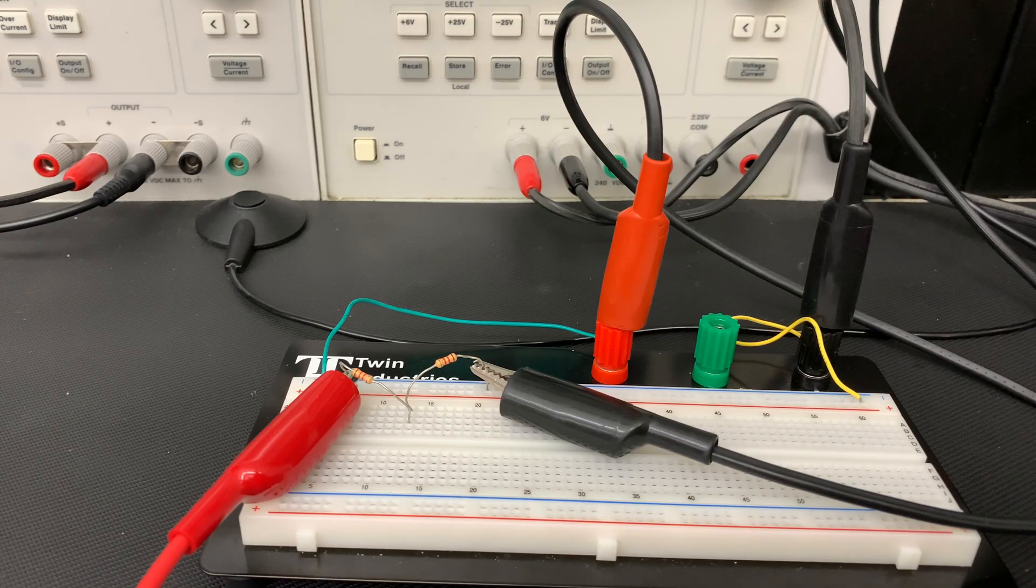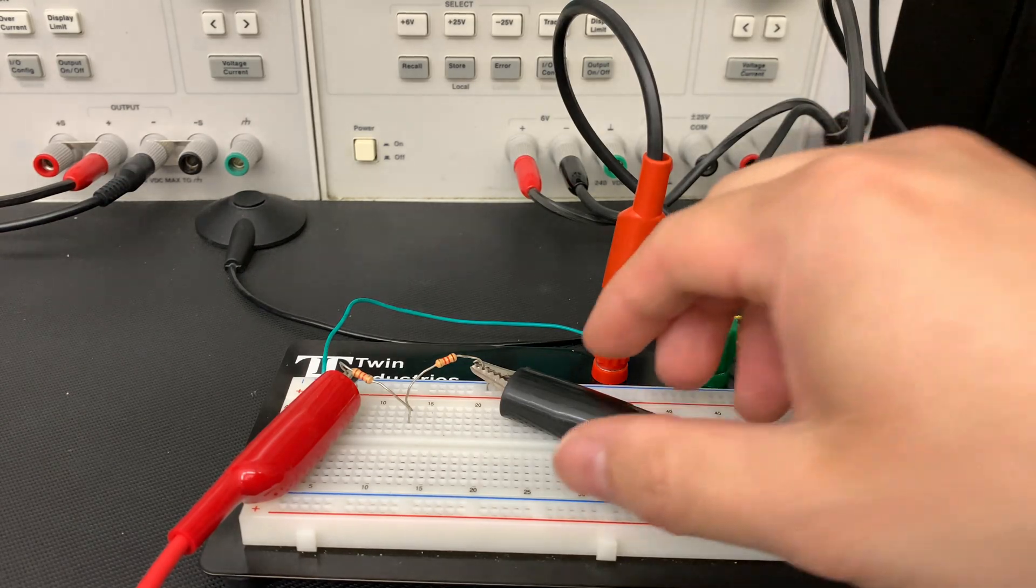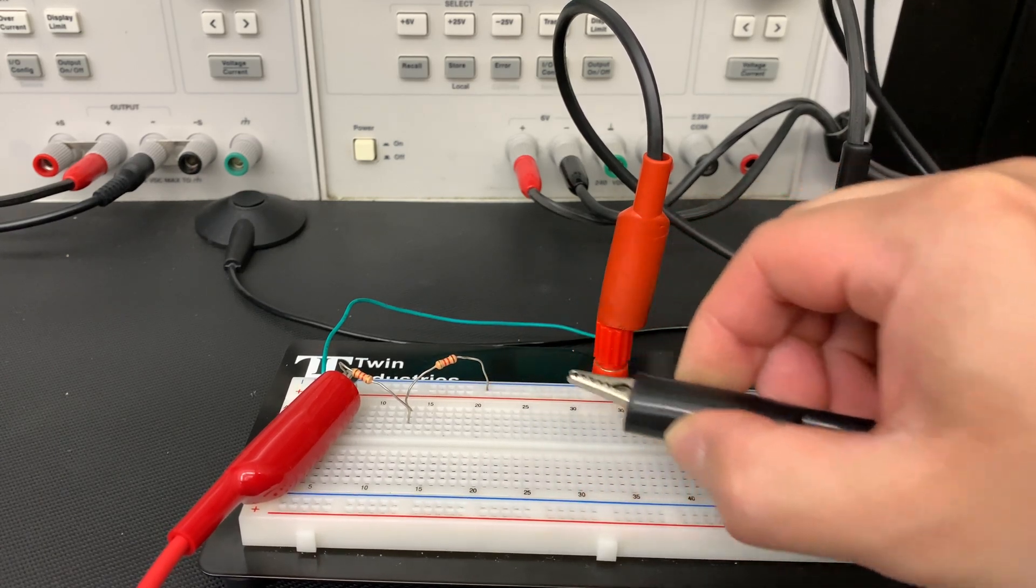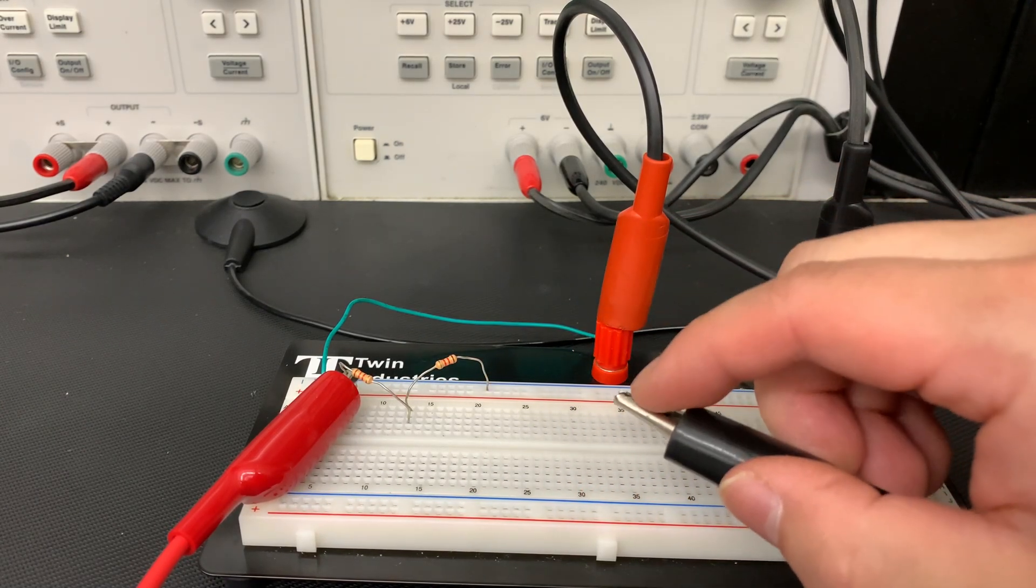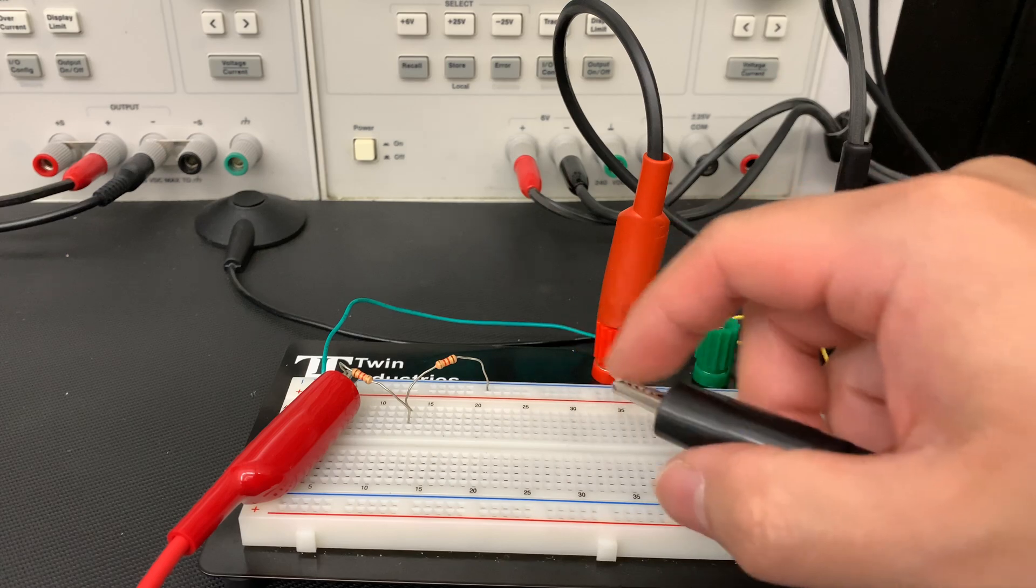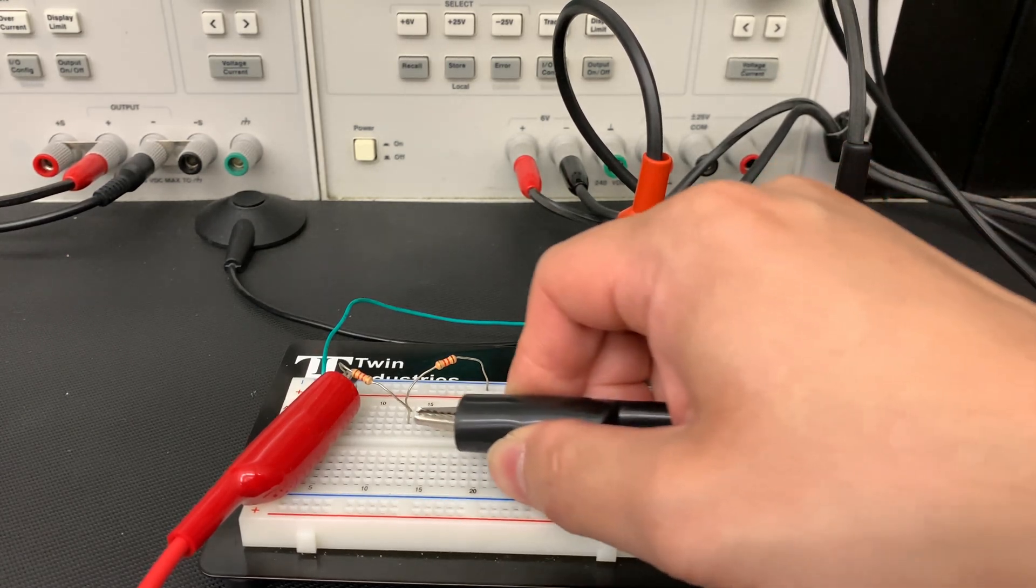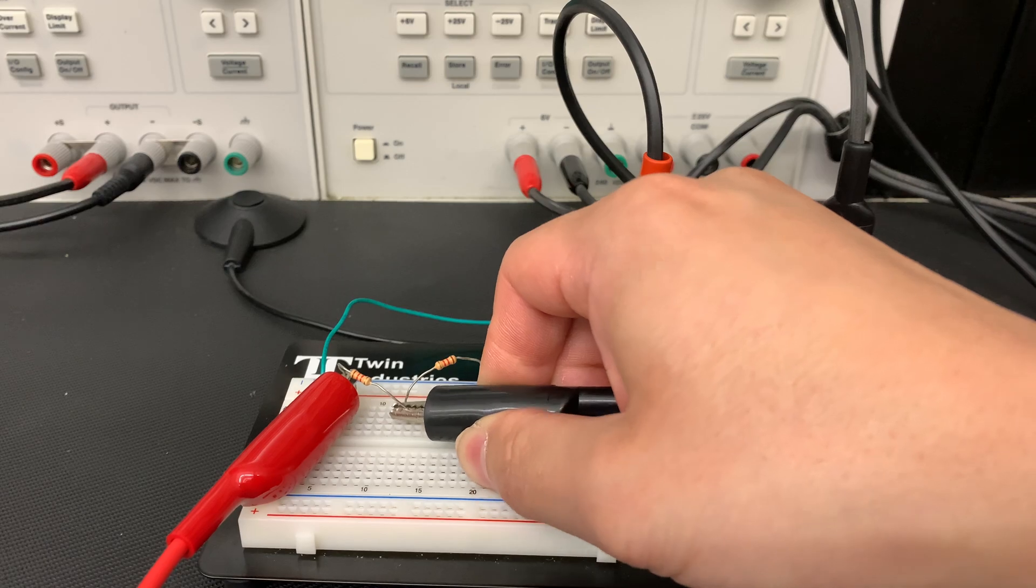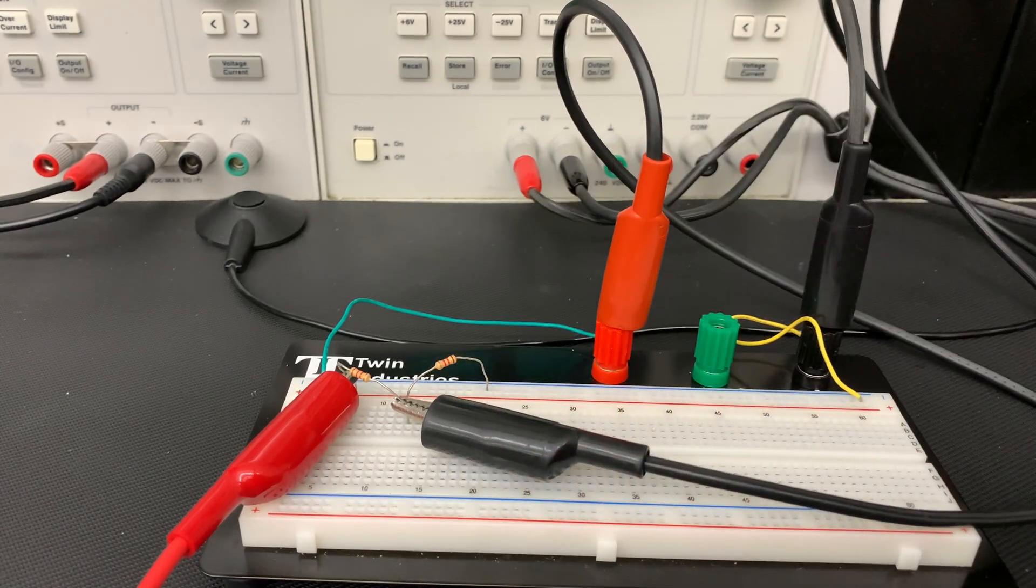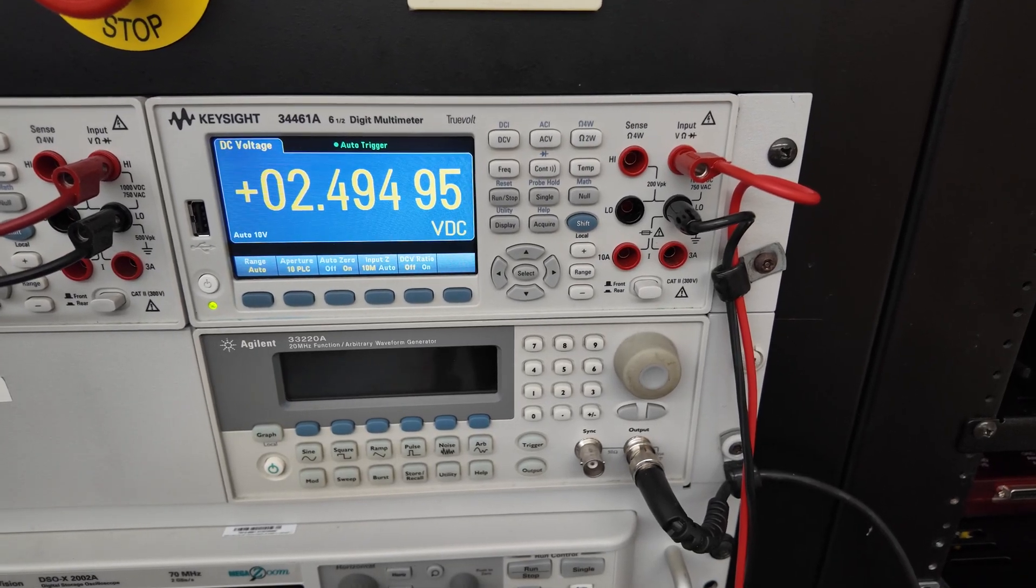You can play around with the alligator clip, and you can also clip a jumper wire on the alligator clip and then plug it into the previous point of the circuit. If I put it in here, we should get 2.54V because that is the other half of our voltage divider circuit.